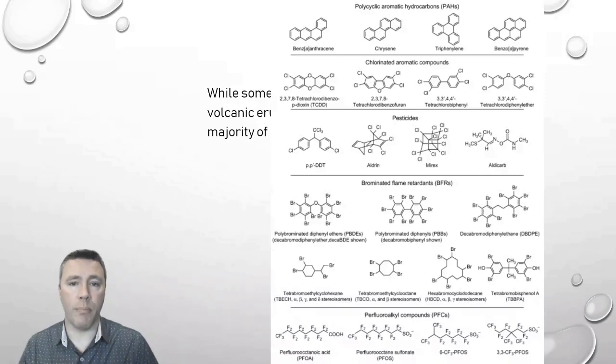Another common theme with persistent organic pollutants is the presence of halogens. So, in this category here, we can see a bunch of chlorine. In this category here, we see bromine. And then, in the ones down in the bottom, we see a lot of fluorine present.